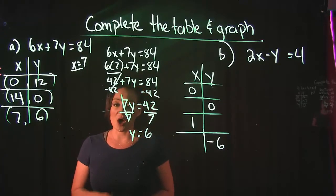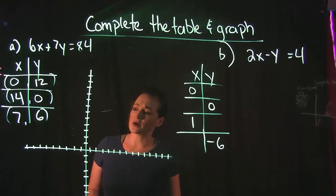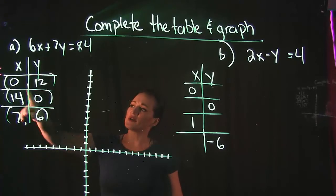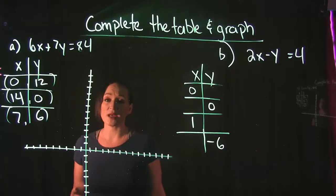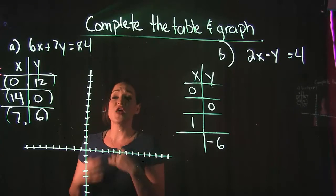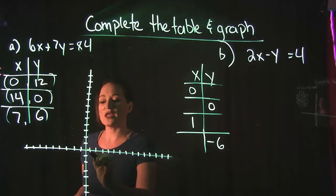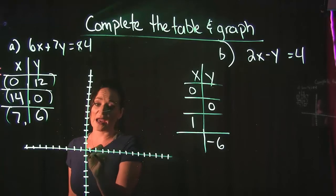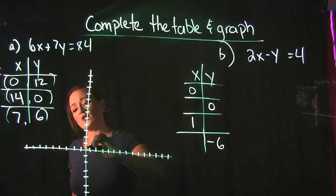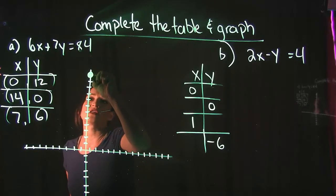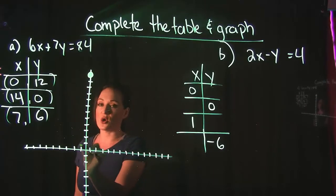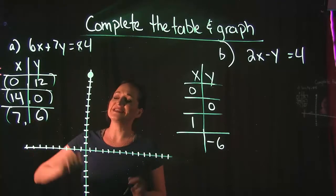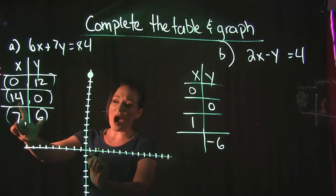Now we'll graph this. I've drawn a coordinate system and we'll take one point at a time. When plotting, always go in the X direction first (left or right), then the Y direction (up or down). Our first point is (0, 12): starting at the origin, we don't move left or right, we go straight up 12 — that's the point (0, 12).